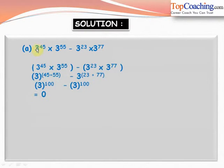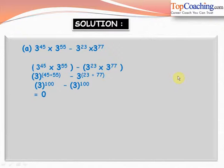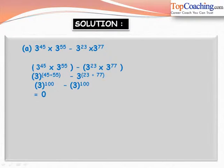For part a, grouping the terms: 3 to the power of 45 into 3 to the power of 55, minus 3 to the power of 23 into 3 to the power of 77. Using the first law, we add exponents: 3 to the power of 45 plus 55, minus 3 to the power of 23 plus 77. Since 45 plus 55 equals 100 and 23 plus 77 equals 100, this becomes 3 to the power of 100 minus 3 to the power of 100, which equals zero.